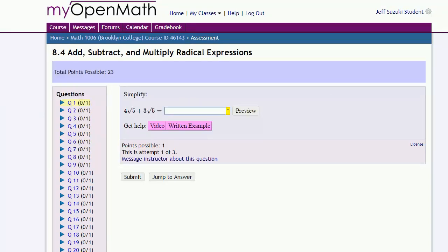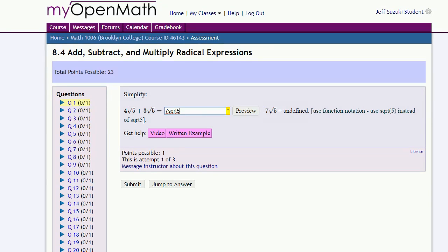For square roots, we can use S, Q, R, T, and then the radicand. Oh, wait, we can't. It doesn't like that. And it does give us some advice. We need to enclose the radicand in parentheses. So let's fix that.